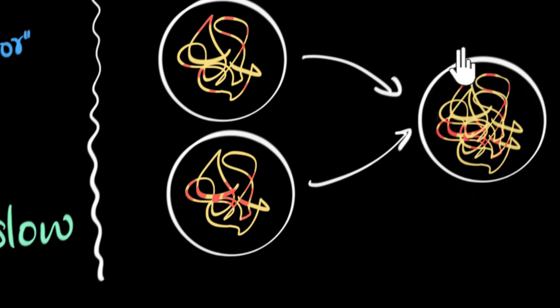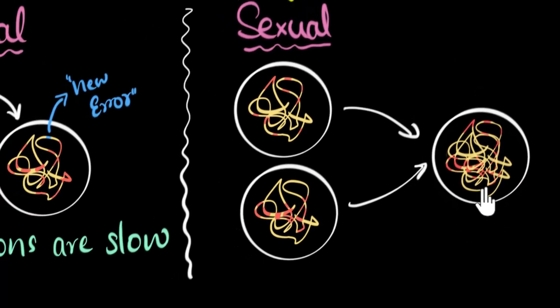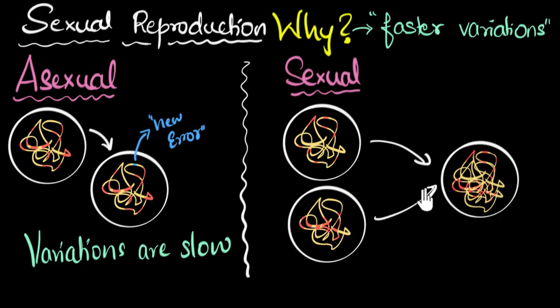And this is why in sexual reproduction, offspring don't look like clones of their parents. You and I resemble our parents, of course, but we don't look like clones of them, like in asexual reproduction. Therefore, we can immediately see very quickly variations get accumulated. And again, when this person is ready to find a mate and start reproducing, more variations get accumulated because of the combination of their DNA. And so immediately you can see in sexual reproduction, variations are faster.